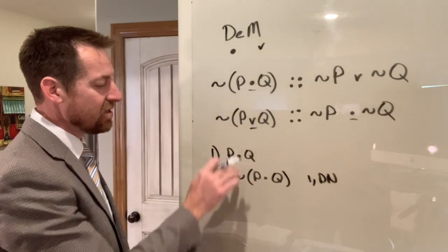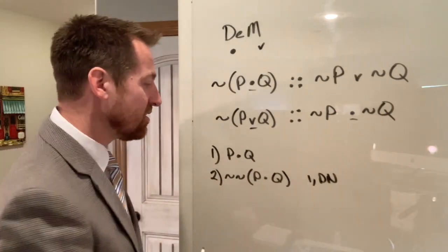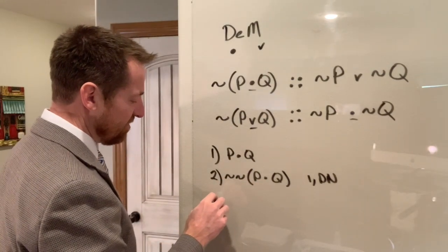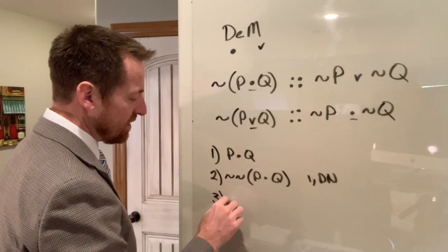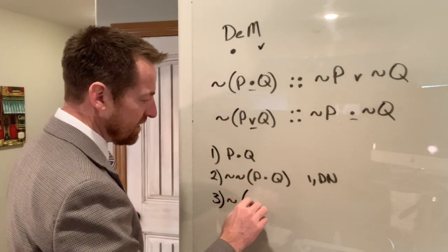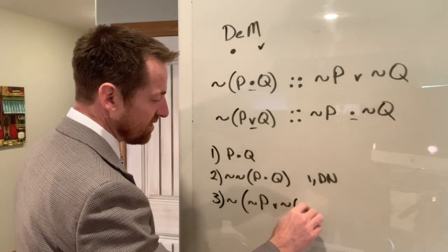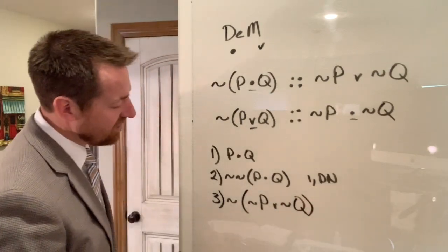And then in the next step, you can take one of these and use DeMorgan's to change the formula to look like this. Now it's not the case that it's not the case that P or not the case that Q. So see what we've done here?